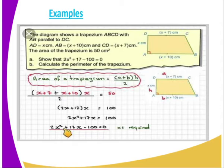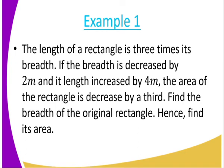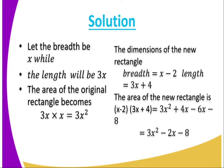Remember, the perimeter is supposed to be the distance all the way around. Let's take another example. The length of a rectangle is 3 times its breadth. If the breadth is decreased by 2 meters and its length increased by 4 meters, the area of the rectangle is decreased. Find the breadth of the original rectangle and find its area. Let the breadth be x, while the length should be 3x. So the area of the original rectangle becomes 3x × x = 3x².